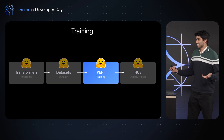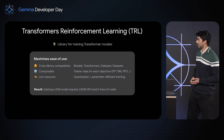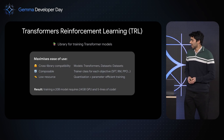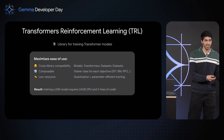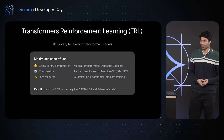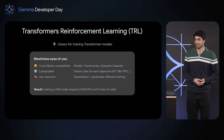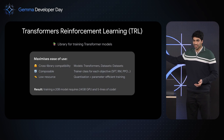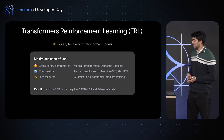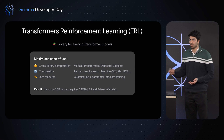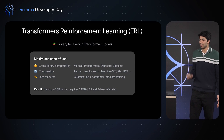Now that we've loaded our dataset, we're ready to start training, and we're going to use the PEFT and TRL libraries. TRL, or Transformers Reinforcement Learning, is a library for training state-of-the-art transformer models, designed to maximize ease of use. It has cross-library compatibility with models from Transformers and datasets from the Datasets library. TRL is very composable — it has a separate trainer class for each downstream task, such as supervised fine-tuning, reward modeling, proximal policy optimization, or direct policy optimization.